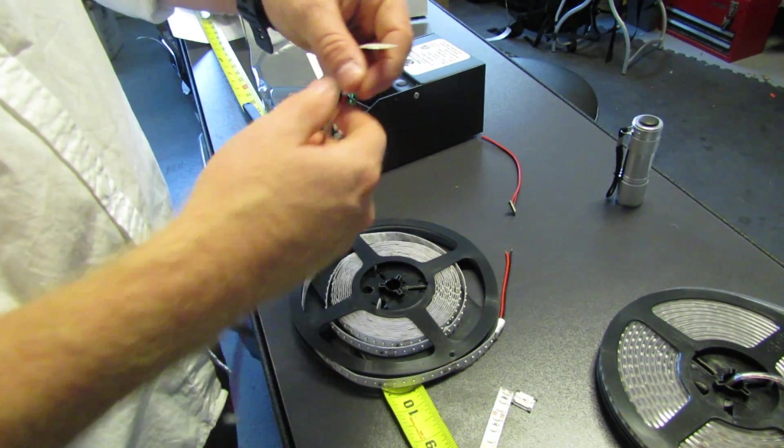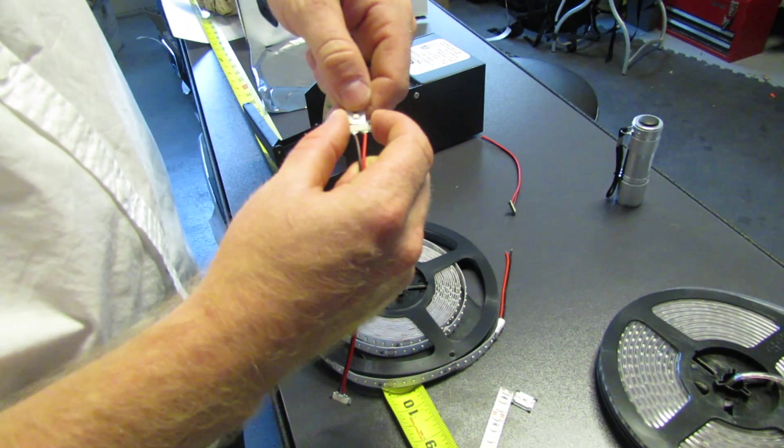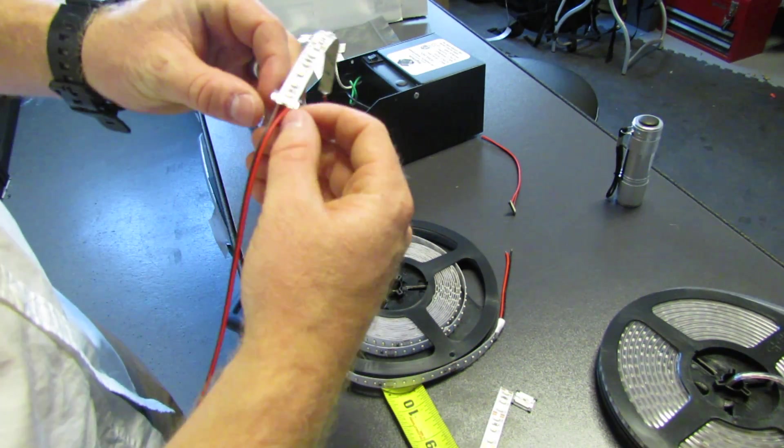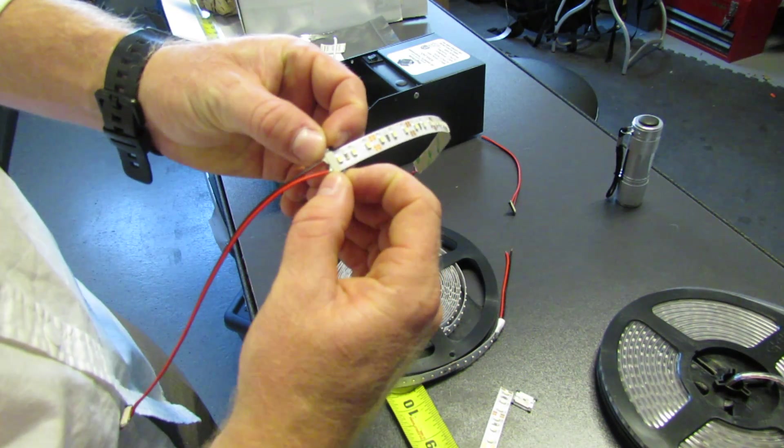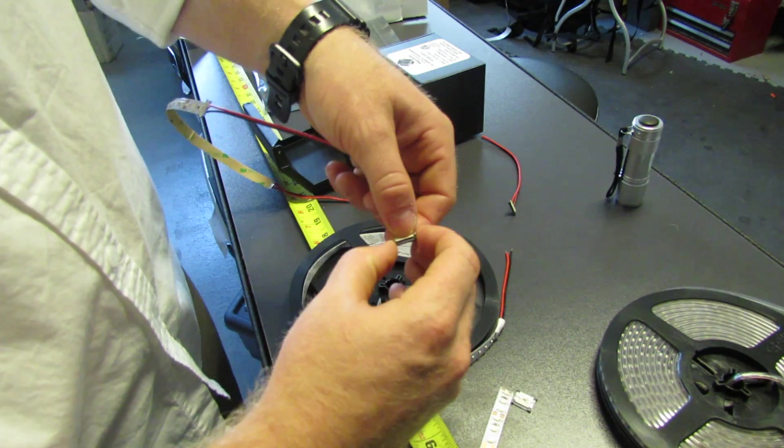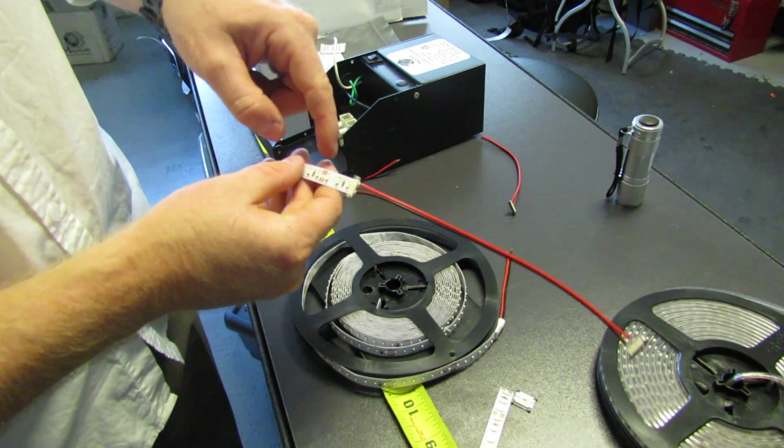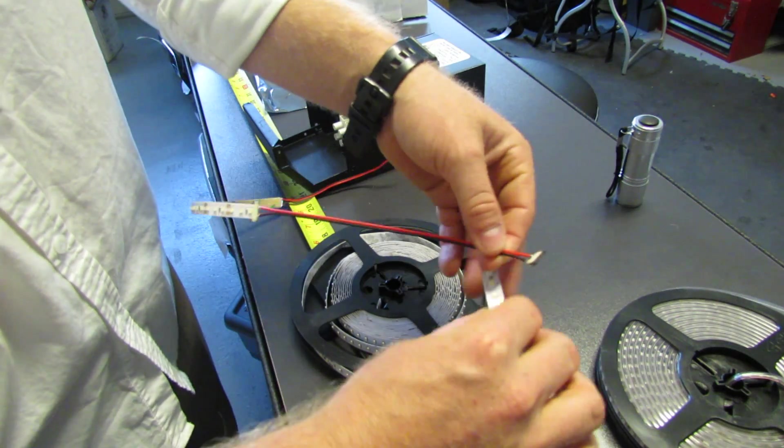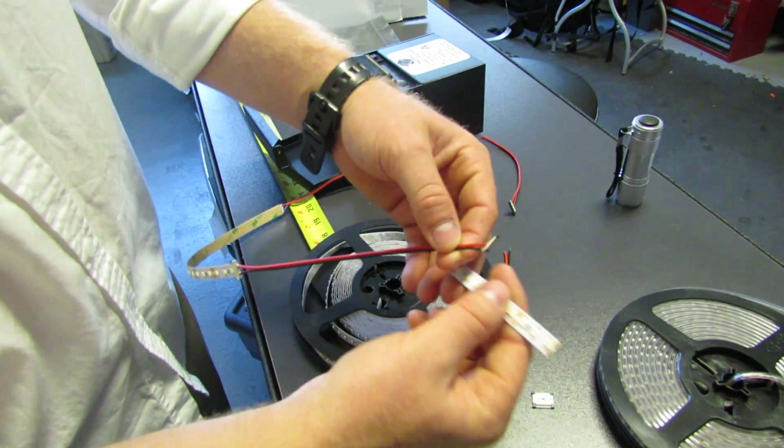What we're going to do is we're going to use this connector. We're going to come on here. We tighten it down just like that. And on this side, we do the same thing. We make sure that the plus lines up with the red or is on the same side as the plus on this strip here.